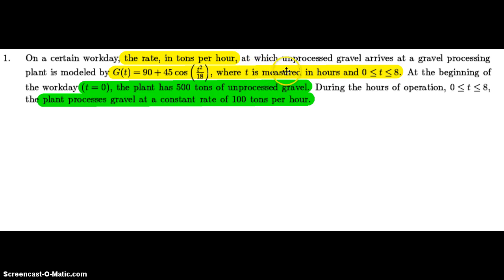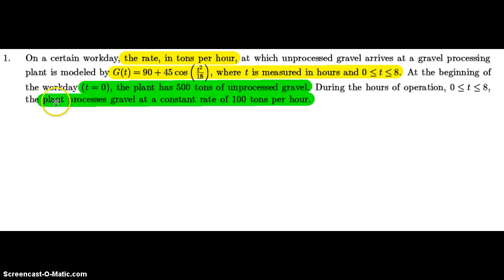The time t is measured in hours and we're interested in an interval from 0 to 8. In green I highlighted some additional stuff we use later: at the beginning of the workday the plant already has 500 tons of unprocessed gravel available for processing, and the plant processes gravel at a constant rate of 100 tons each hour.